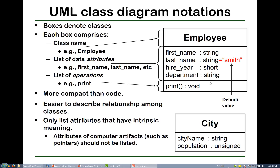For attributes, you should only list the ones that have realistic or intrinsic meaning. For example, for this employee class, you may have the attributes of first name, last name, hire year, and department name. You should not list the programming artifacts that are useful only for implementation purposes, such as private data members and private member functions.